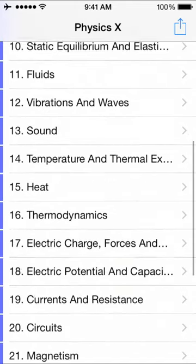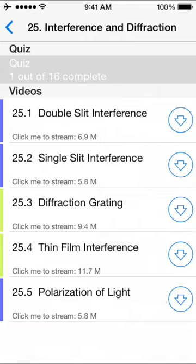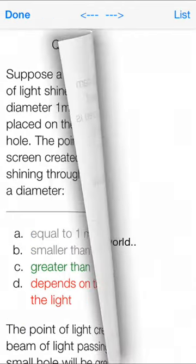Physics X is by far the most useful and comprehensive study tool available. It covers every topic from introductory physics and includes over 500 multiple-choice questions, each with its own detailed solution.